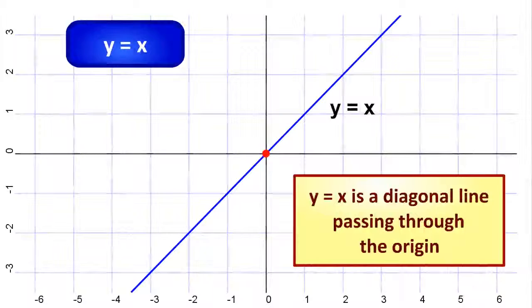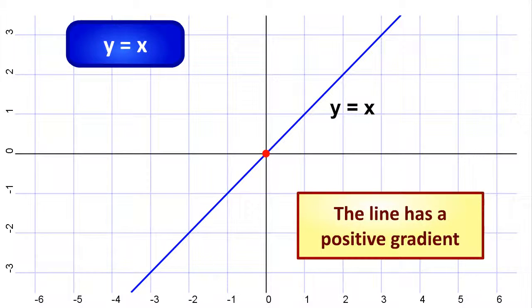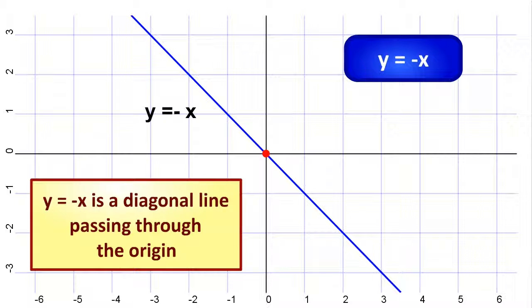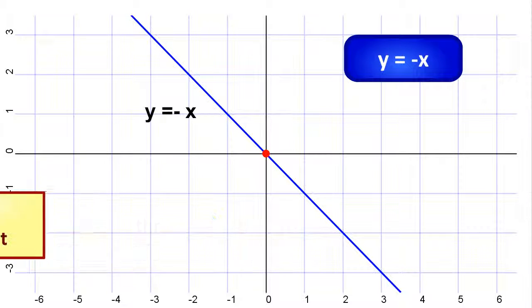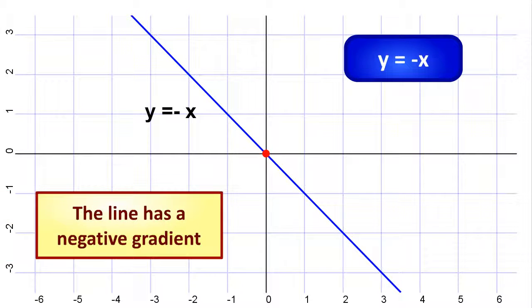Y equals X is a diagonal line passing through the origin. The line has a positive gradient. Y equals minus X is also a diagonal line passing through the origin, but the line has a negative gradient.